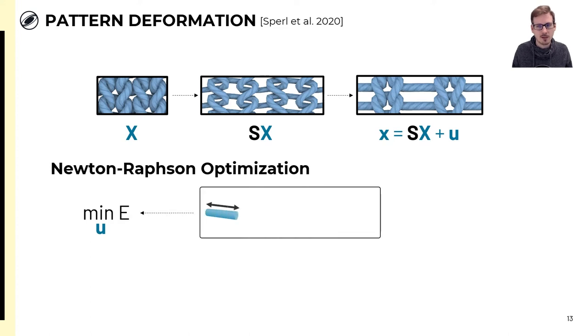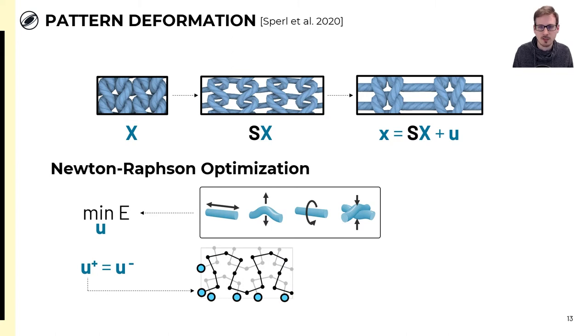This basically amounts to Newton-Raphson optimization for minimizing the total elastic energy E of the yarns, modeling stretching, bending, twisting and collisions of yarn segments. This optimization should preserve the overall deformation S. We can express this by saying that the average gradient of X should be equal to S. With some simple manipulation, this can be transformed into periodic boundary conditions, where the displacements U plus on one side should match the displacements on the corresponding other side.